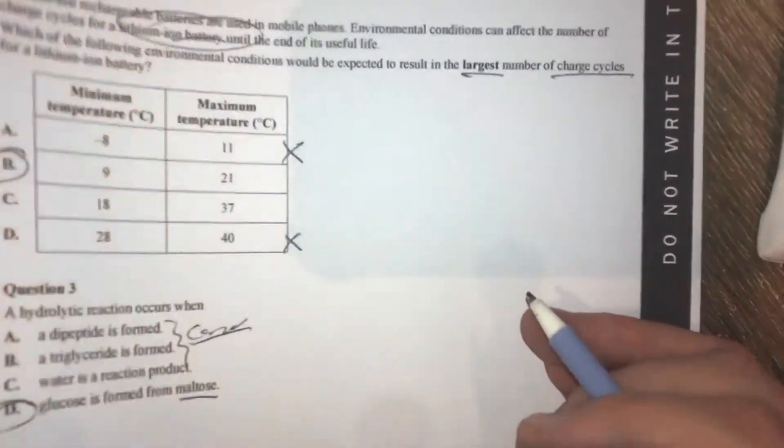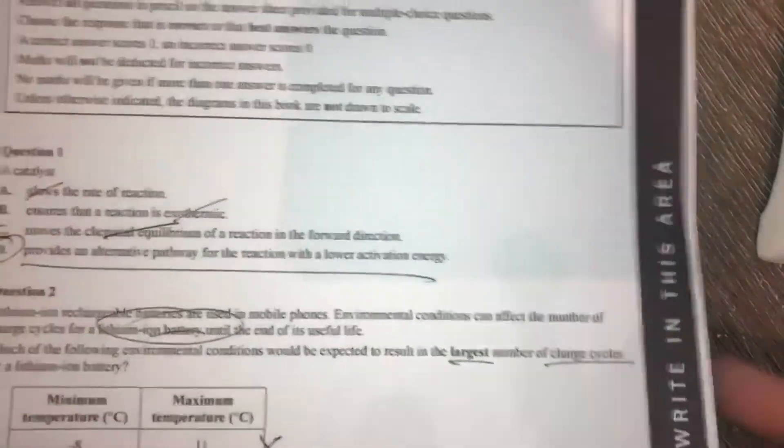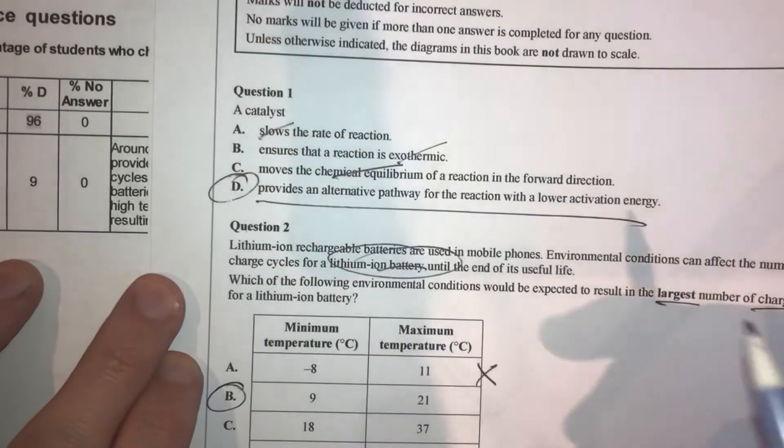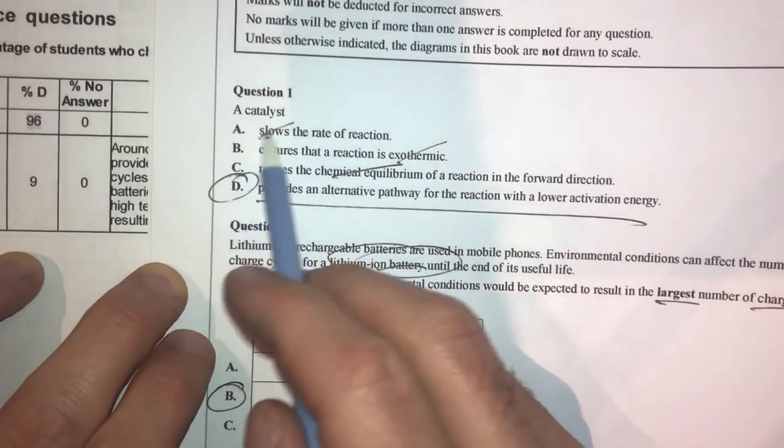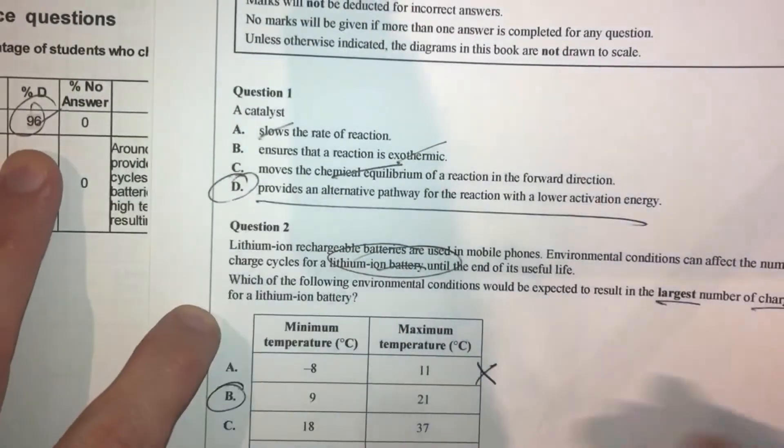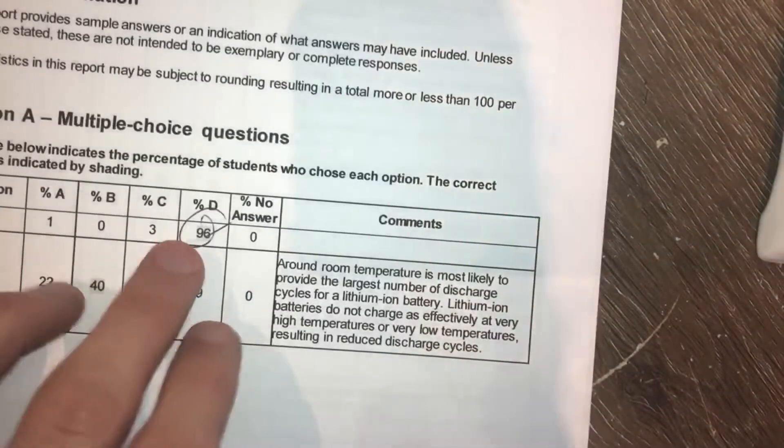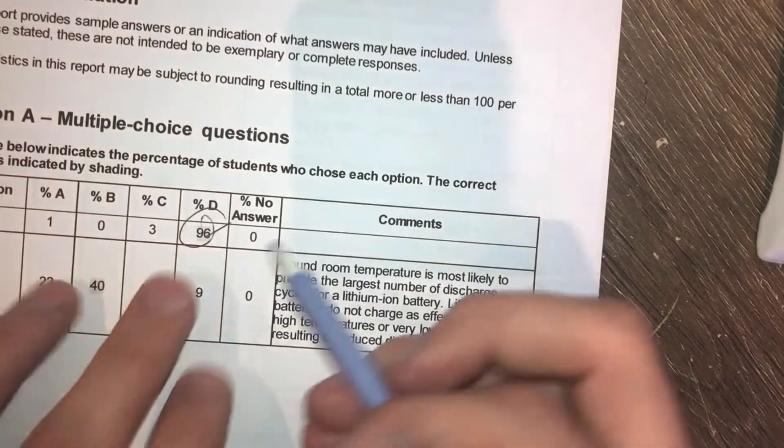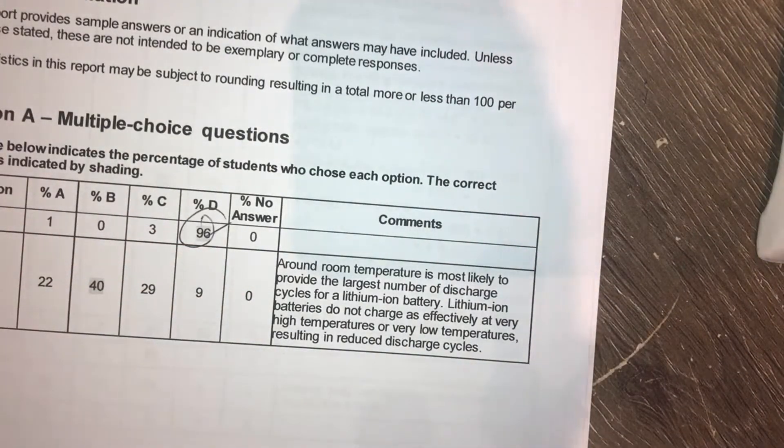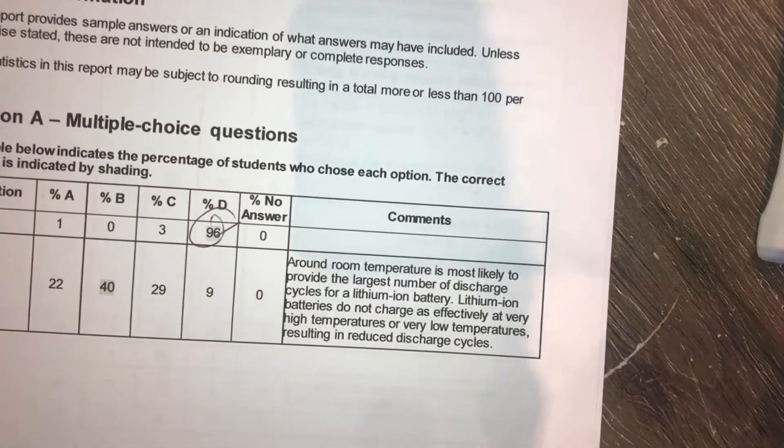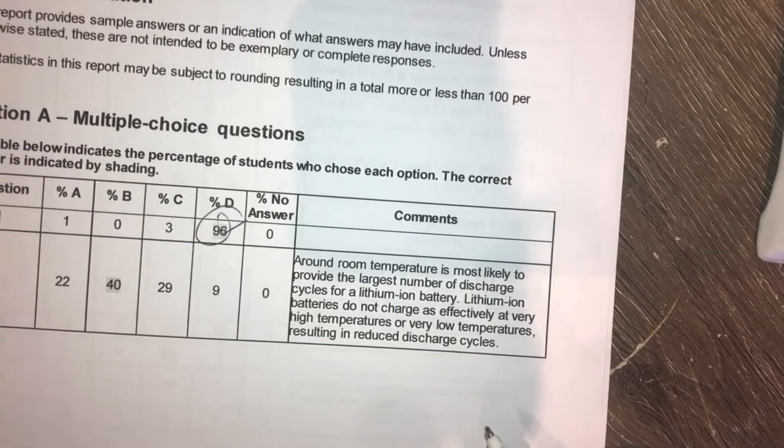All right, quickly, let's look through our examiner's report on these questions. So question 1. What does the catalyst do? No brainer. D. That looks like everyone in the state pretty much got that answer as well. You can see 96% of students got the answer to question 1, which is a nice way to start an exam. So everyone in 2017 probably would have gone into this going, yes, at least I got one mark, which is fantastic.